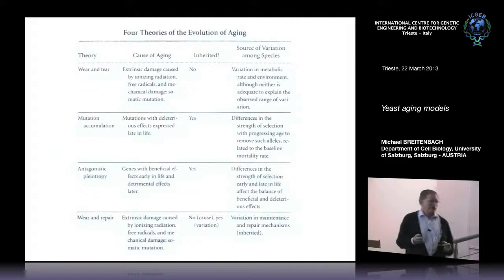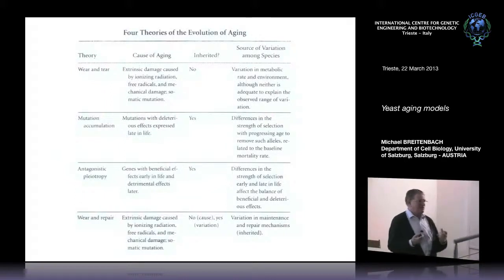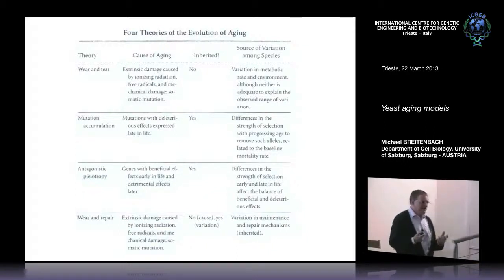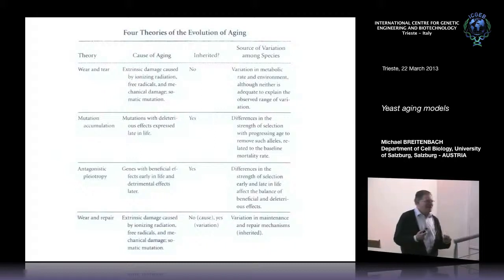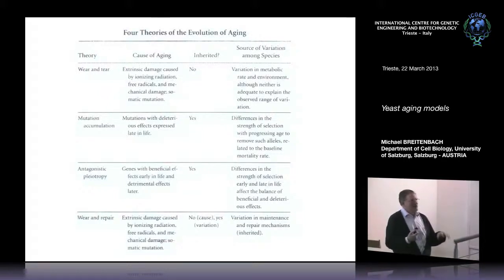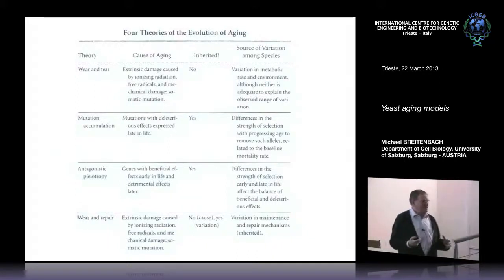Then there is antagonistic pleiotropy. During evolution, alleles have been selected that are good for the species — for example, alleles that increase fecundity in young age, leading to a higher number of progeny. But the same allele can in some cases be very bad for you once you are 70 years old. This is what aging researchers call antagonistic pleiotropy. It is a fact and it occurs, but it doesn't really explain all of aging.